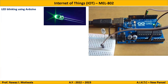Let us start with the first program — LED blinking through Arduino. The first step is to declare the pin. For this program I will be using pin number seven, where I will be connecting the LED. So in step one I will write: int LED1 = 7.